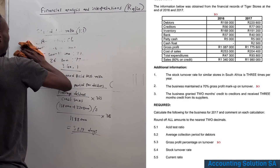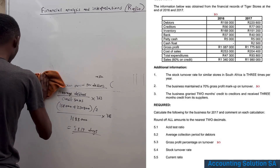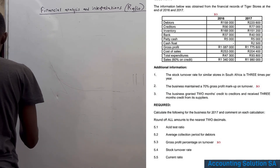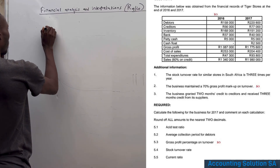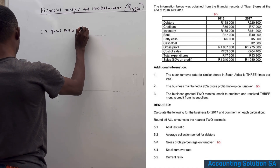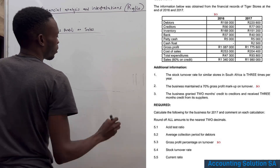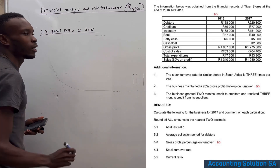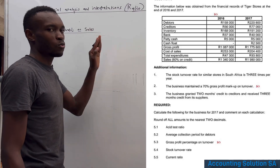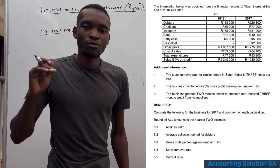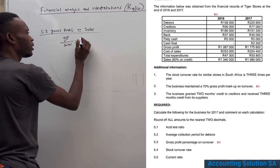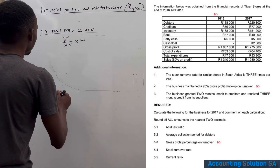Question 5.3 requires us to calculate gross profit percentage on turnover (on sales). For all profitability ratios with the word 'on,' the formula is simply: gross profit divided by sales, multiplied by 100.